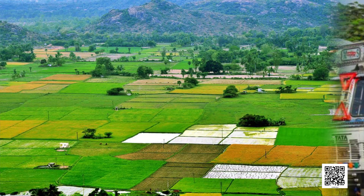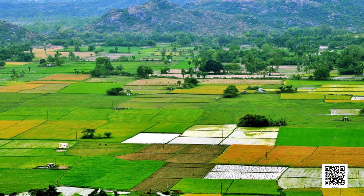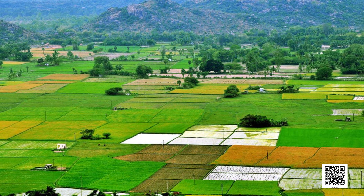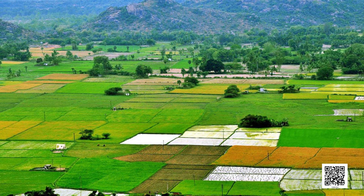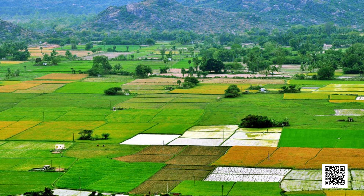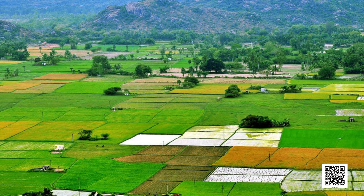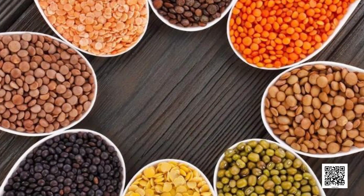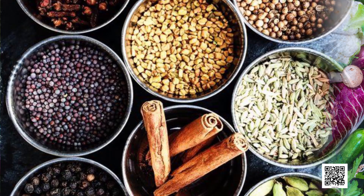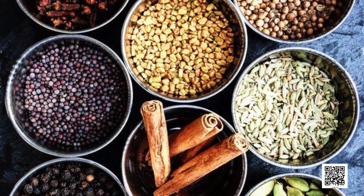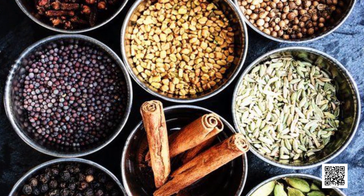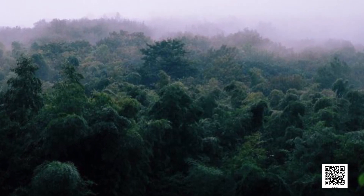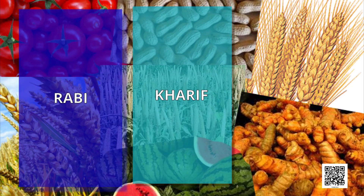Let's talk about cropping patterns. We have studied the physical diversities and plurality of cultures in India. These are also reflected in agricultural practices and cropping patterns in our country. Various types of food and fiber crops, vegetables and fruits, spices and condiments, etc. constitute some of the important crops grown in the country. India has three cropping seasons: Rabi, Kharif and Zaid.